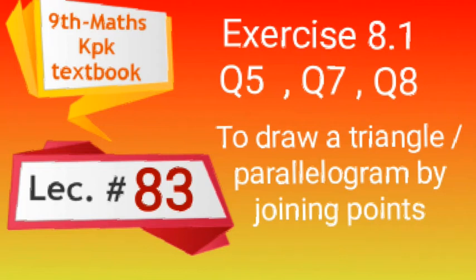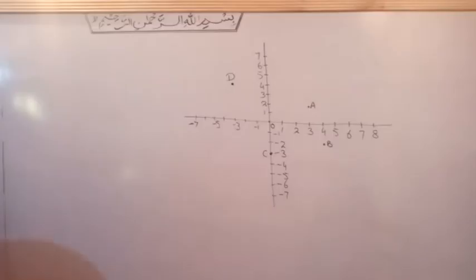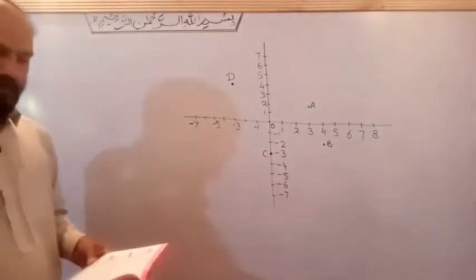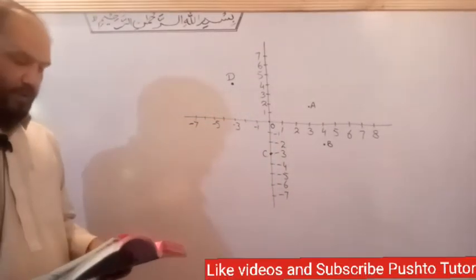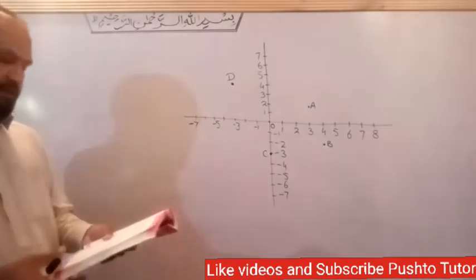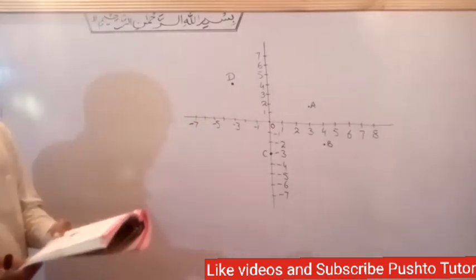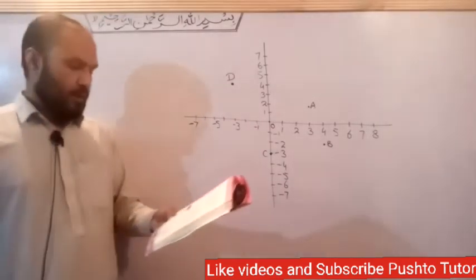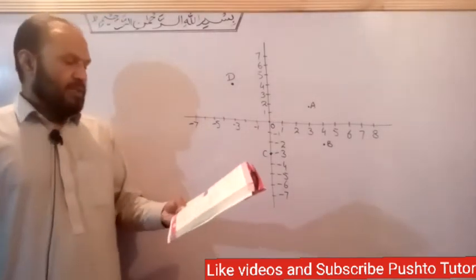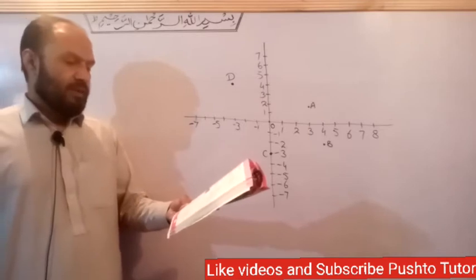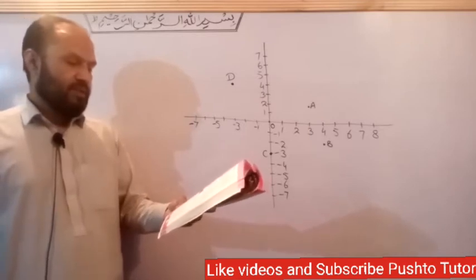Bismillahirrahmanirrahim. I am going to lecture the 9th class maths. I am going to do Exercise 8.1, question number 5. Question number 5 asks you to write the coordinates of the points A, B, C, and D in the given graph.